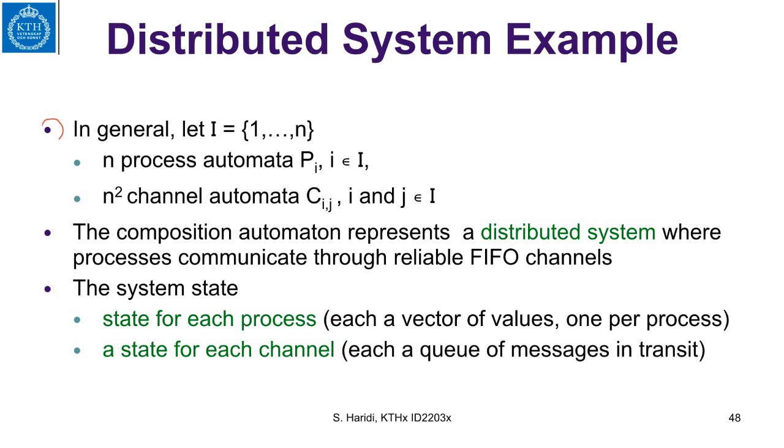We have in general a system of n processes, so we have processes pi where i is an element of a set 1 to n, and we have n-square channel automata from each process to the other process. So this channel will be from process i to process j.